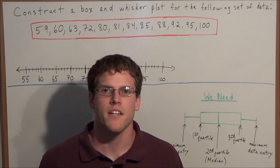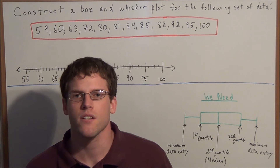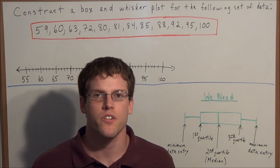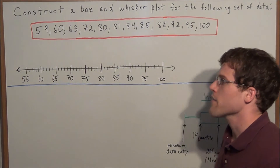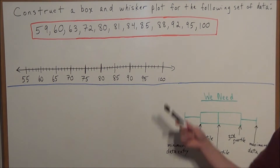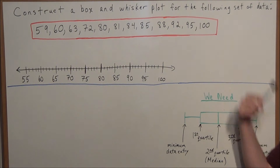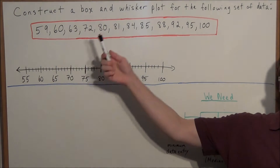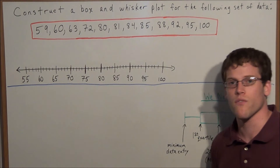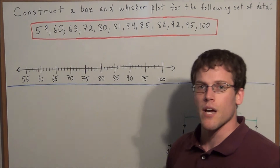Hi, my name is Vincent and today I want to take a look at how to construct a box and whisker plot. We have the problem: construct a box and whisker plot for the following set of data, and we have a list of 12 numbers.